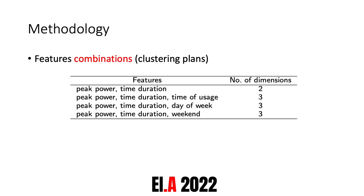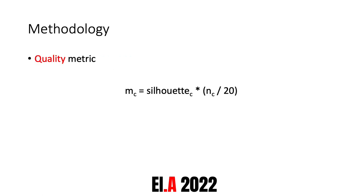The clustering algorithm runs in parallel with four different feature combinations, also called clustering plans. There is a two-dimensional clustering plan formed by peak power and time duration, and three three-dimensional clustering plans formed by the combination of peak power and time duration with time of usage, day of week, and the weekend variable respectively. To evaluate the quality of the clusters, we define a quality metric given by the silhouette score multiplied by the number of points in the cluster divided by 20, which penalizes smaller clusters and favors more significant patterns.